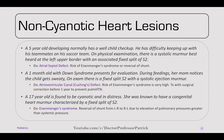A 5-year-old has difficulty keeping up with his soccer teammates. On exam, there's a systolic murmur best heard at the left upper sternal border with an associated fixed split S2 — pathognomonic for ASD, or atrial septal defect. There is a risk of Eisenmenger syndrome — reversal of the shunt — if the pulmonic circuit develops pulmonary hypertension with higher pressures than the systemic circuit. A one-month-old with Down syndrome gets sweaty during feedings, with a fixed split S2 and systolic ejection murmur — high risk for endocardial cushion defect, or atrioventricular defect. Surgical correction before one year is needed to prevent pulmonary hypertension.